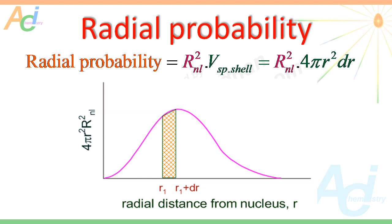It is also interesting to note that the area under the entire curve must be equal to 1 or 100%, since the probability of finding the electron over all space from 0 to infinity must equal 1 according to the quantum mechanical model. In other words, the sum of all the probabilities must be equal to 1. In quantum mechanics, this is also known as the normalization condition.